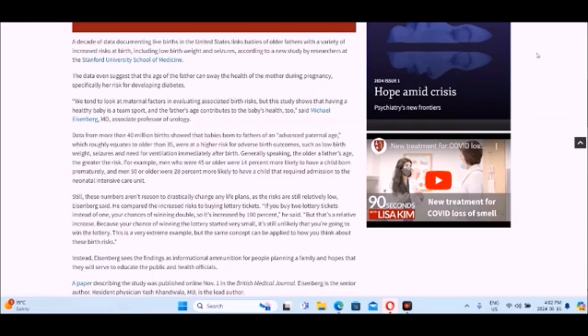We tend to look at maternal factors in evaluating associated birth risks. But this study shows that having a healthy baby is a team sport, and that the father's age contributes to the baby's health too, says Michael Eisenberg, MD associate professor of urology. Data for more than 40 million births show that babies born to fathers of an advanced parental age, which roughly equates to older than 35, were at a higher risk for adverse birth outcomes, such as low birth weight, seizures, and a need for ventilation immediately after birth. Generally speaking, the older fathers age, the greater the risk. For example, men who are 45 or older were 14% more likely to have a child born prematurely, and men 50 or older were 28% more likely to have a child that required admission to the neonatal intensive care unit.